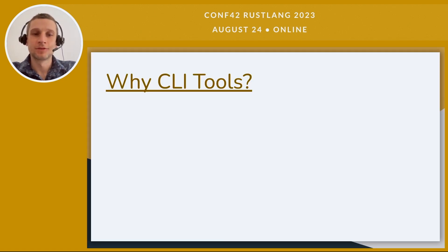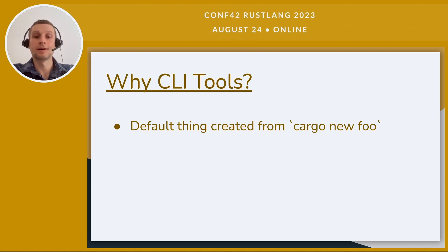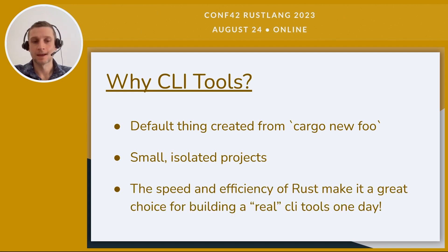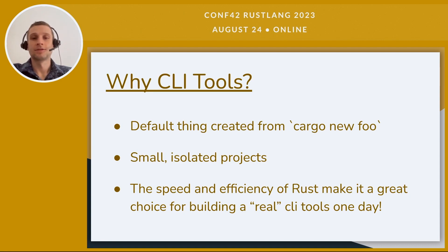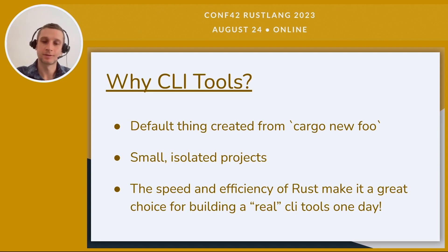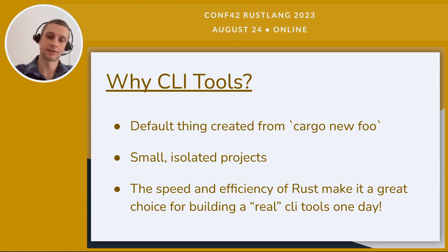Why use Rust for CLI tools, and why CLI tools as a way to learn Rust? A CLI tool is the default thing created when you run Cargo New. These CLI tools are usually small, isolated projects, which makes it easy to practice one specific thing: Rust. The speed and efficiency of Rust make it a great choice for building a real CLI tool. You could use Go, Python, or Node.js, but even that little bit of garbage collector virtual machine that has to boot up causes a split second of delay, which can be annoying. With Rust, everything executes extremely fast.